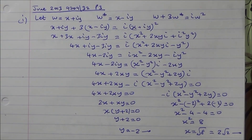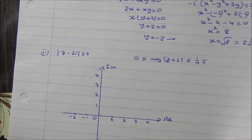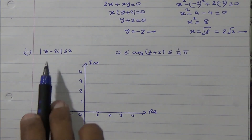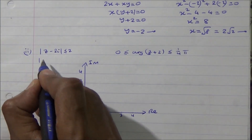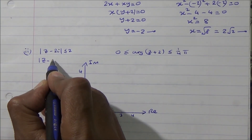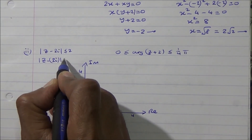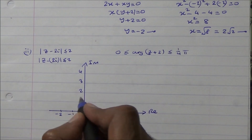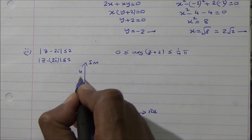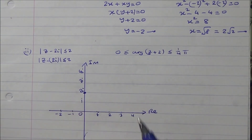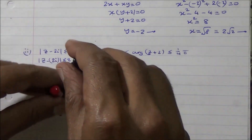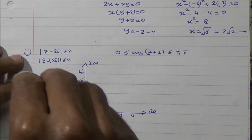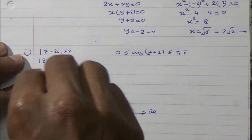For the second part, we sketch on an Argand diagram. The first inequality, mod of z minus 2i less than or equal to 2, is a circle with centre 2i and radius 2. The shaded region is inside the circle. The second condition, 0 less than or equal to argument of z plus 2, less than or equal to pi over 4, is a half-line from minus 2 at angle pi over 4. We draw the line at pi over 4 from the point minus 2.